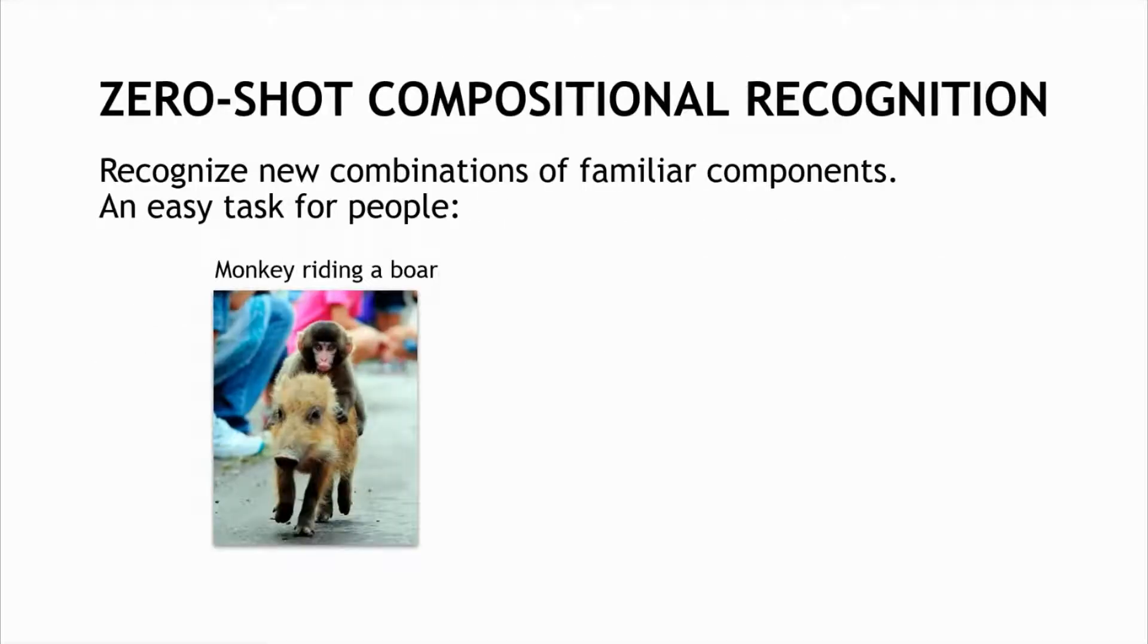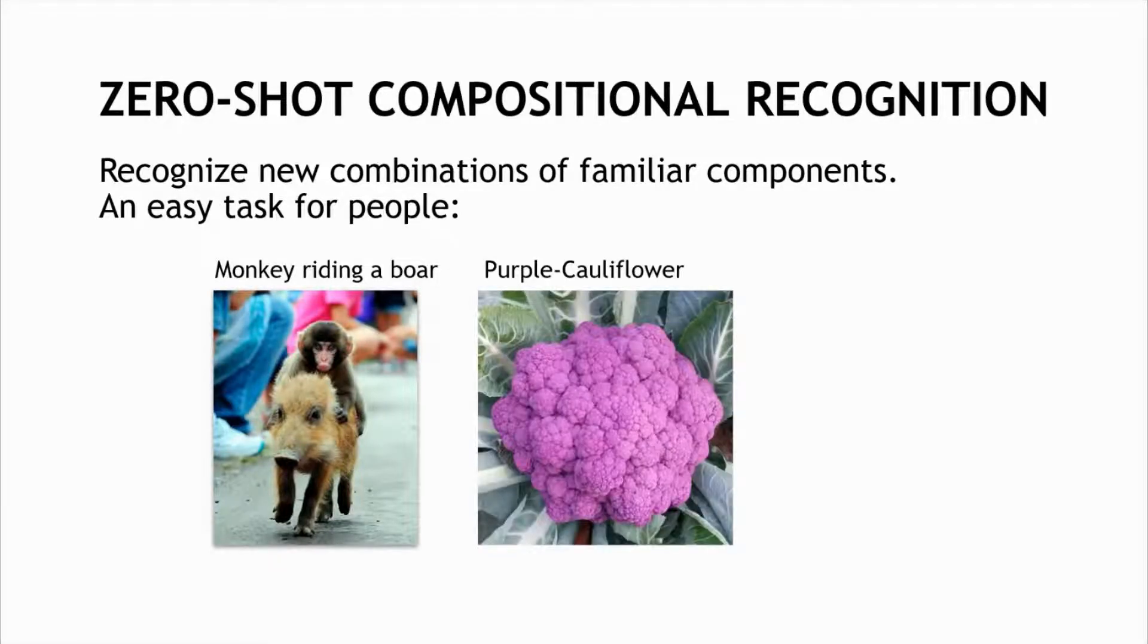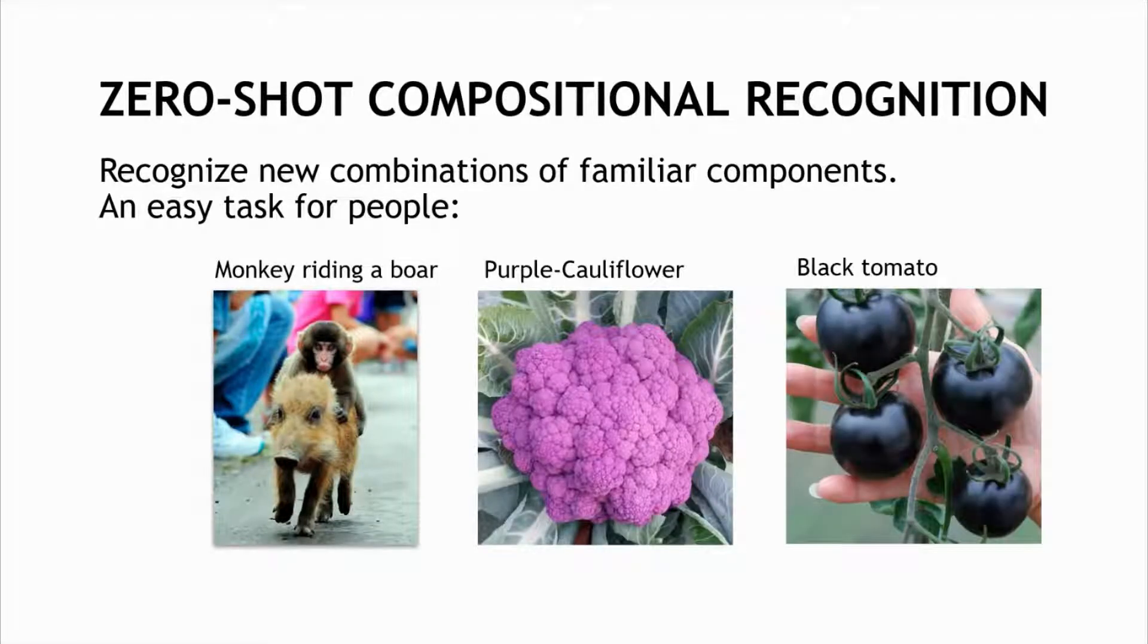This work is about recognizing new compositions of familiar components, images like a monkey riding a boar, a purple cauliflower, or a black tomato. In all these cases, familiar components are combined in new ways.